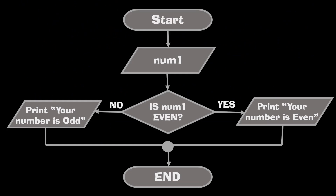On this flowchart you can see how the program is going to work. We are going to assign the value the user entered as num1, then we check whether it's even or odd.